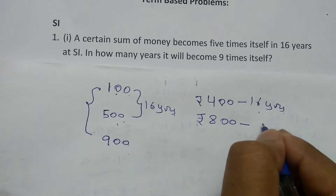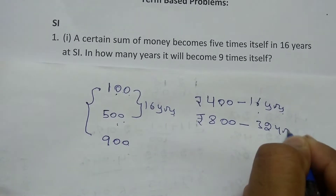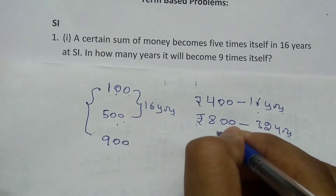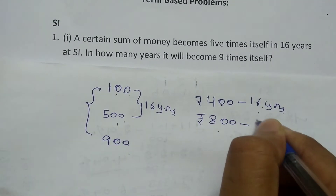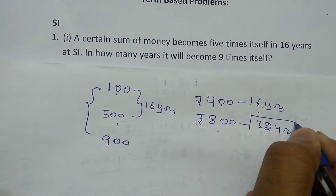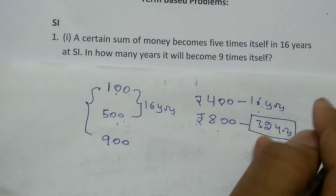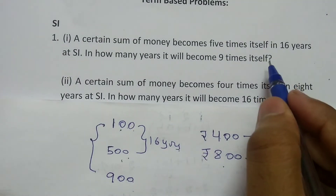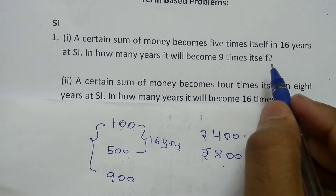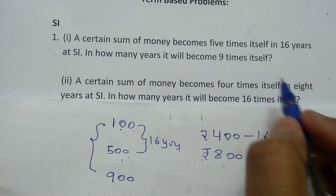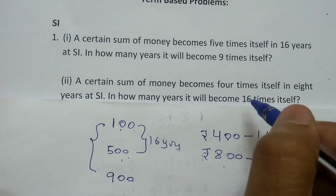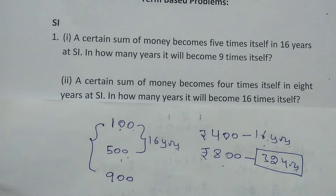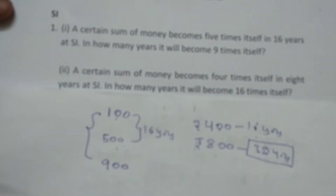So 16 times 2 gives 32 years. The answer for the first question is 32 years. You can use the same method for the second question because it is also based on simple interest.